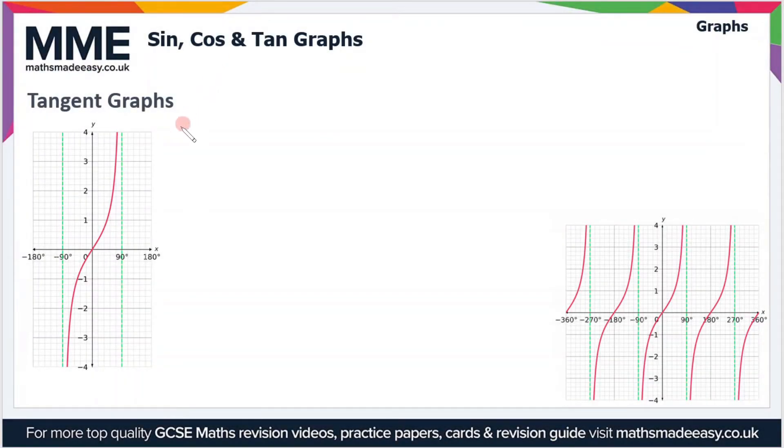So finally, let's look at tangent graphs then. And you'll notice that these are significantly different from cosine and sine graphs. What are the key features? Well, first of all, you can see that it goes from minus 90 to 90 degrees in this one period. So we can say that the period is 180 degrees, whereas in the sine and cos graphs it was 360 degrees. So this means that the graph repeats itself every 180 degrees.